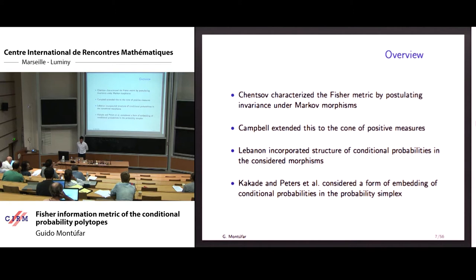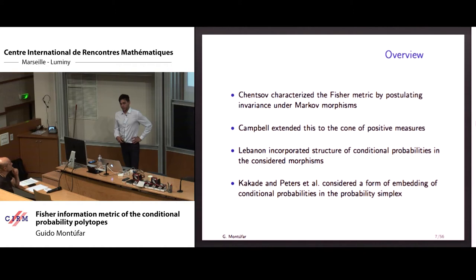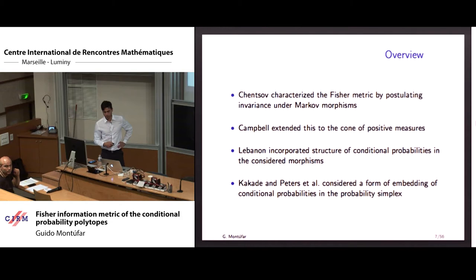For the introduction: Chentsov came up with a characterization of the Fisher metric by postulating invariance under certain natural maps called Markov morphisms, and he basically proved that this is the only metric invariant under these transformations. Campbell extended this characterization to a cone of positive measures — when you disregard normalization. Lebanon then incorporated some of the structure of conditional probabilities, meaning the matrix structure, into the mappings — the morphisms that you study.